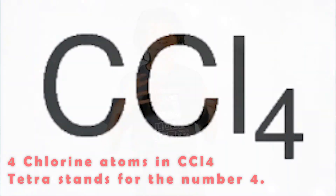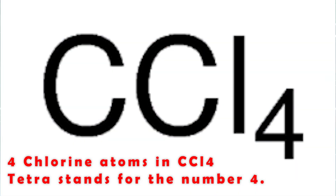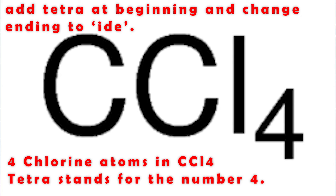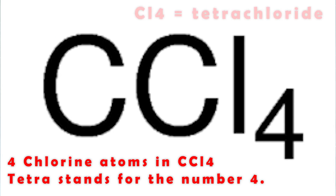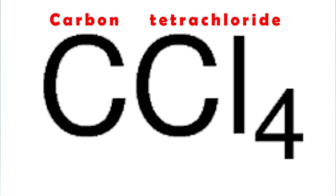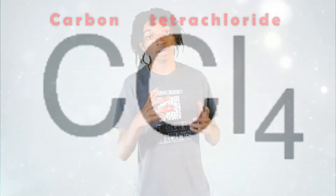There are four chlorine atoms in this chemical formula, so what prefix stands for the number four? You got it — tetra stands for the number four. So we would add tetra at the beginning and change the end to IDE. Chlorine now becomes tetrachloride. The chemical name for CCl4 is carbon tetrachloride.